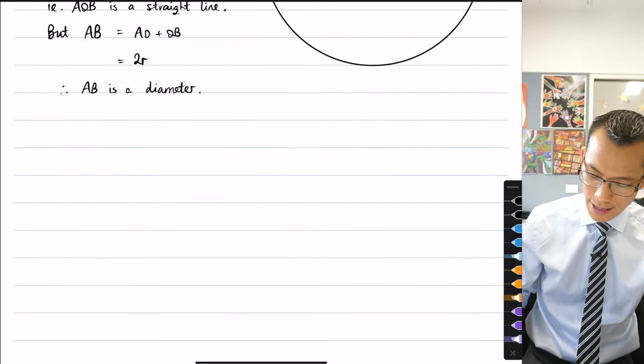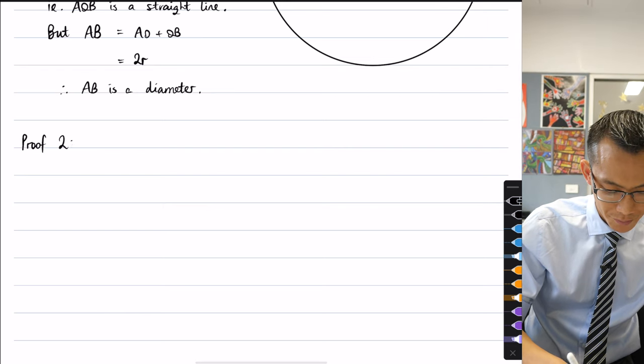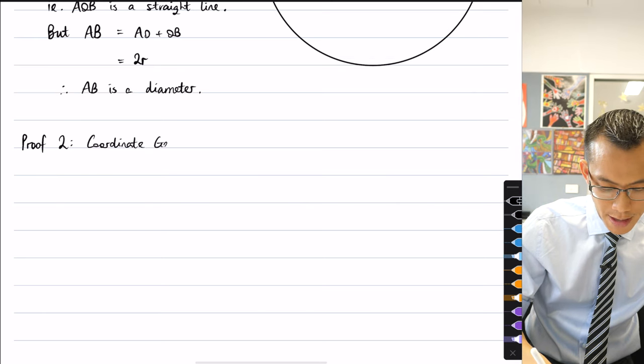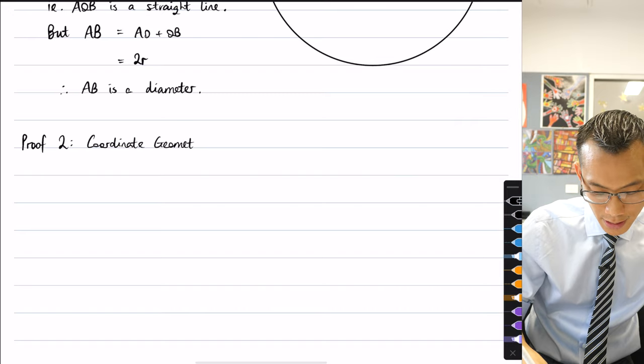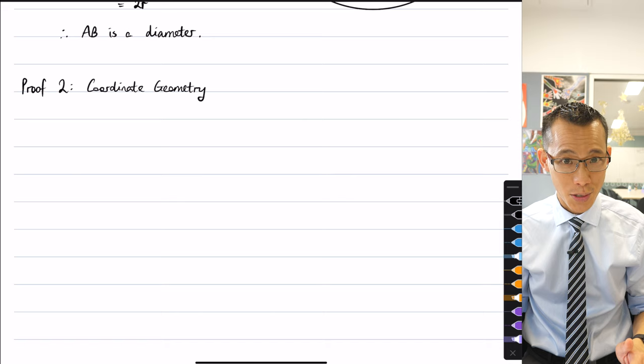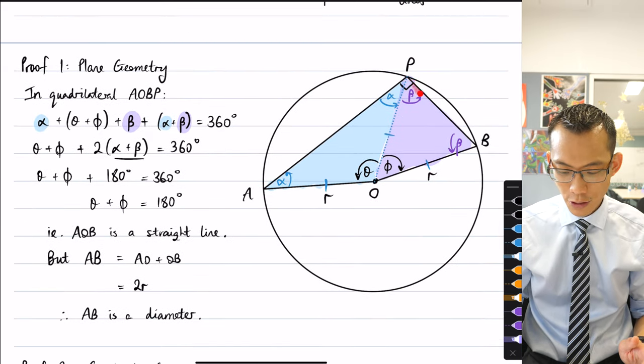What I'm going to do is call this proof 2: coordinate geometry. Now one of the other attractive things about this method, despite the fact that it will be longer and I think harder, is that you don't even need to start with a circle. All you need to know is there is some right angle here.